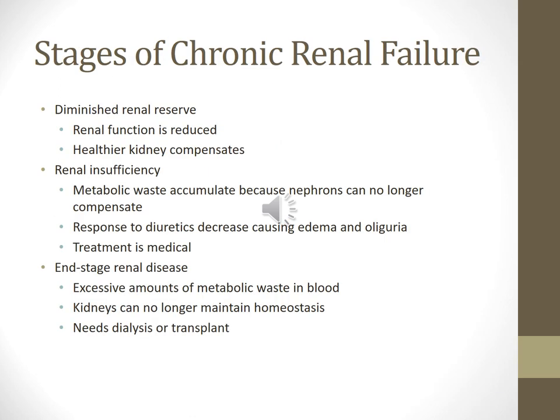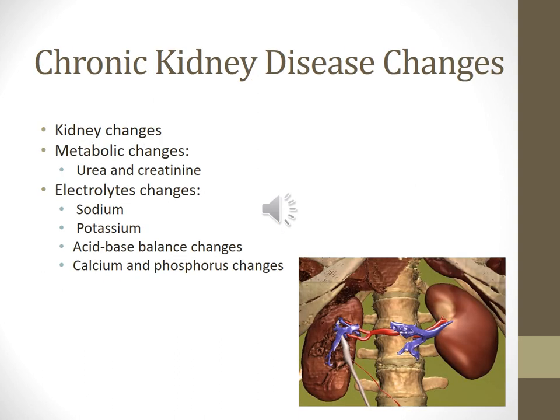Stages of chronic renal failure: Diminished renal reserve — renal function is reduced but the other kidney may compensate. Renal insufficiency — nephrons can no longer compensate; treatment is medical. End-stage renal disease — dialysis is required. CKD changes: Reduced glomerular filtration rate causes many problems including abnormal urine production, poor water excretion, electrolyte imbalances, and metabolic abnormalities. The kidneys can maintain effective GFR due to healthy nephrons working harder, and homeostasis is maintained until later stages.